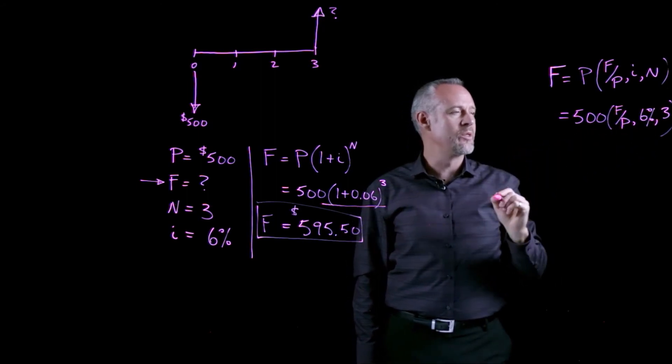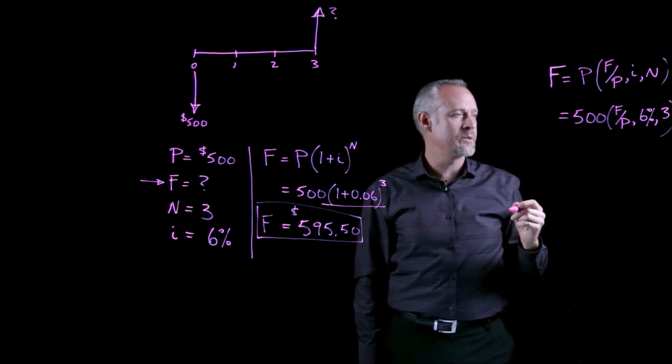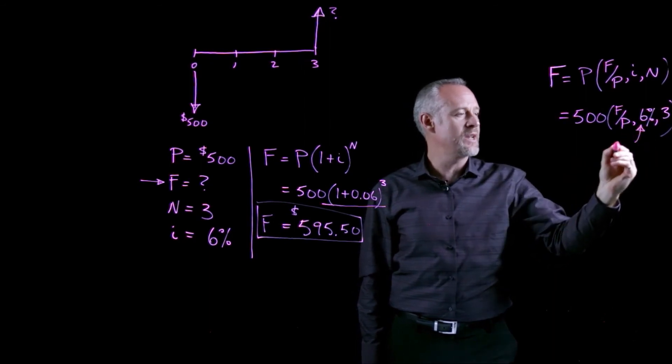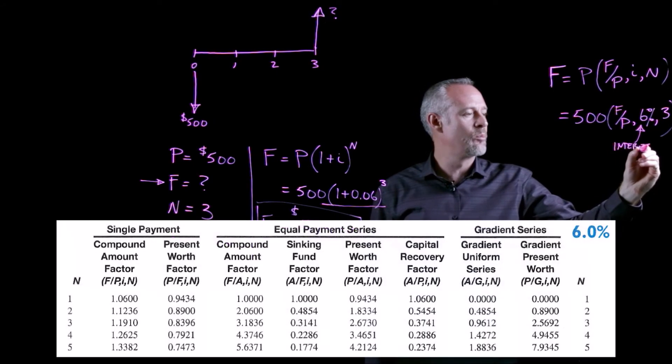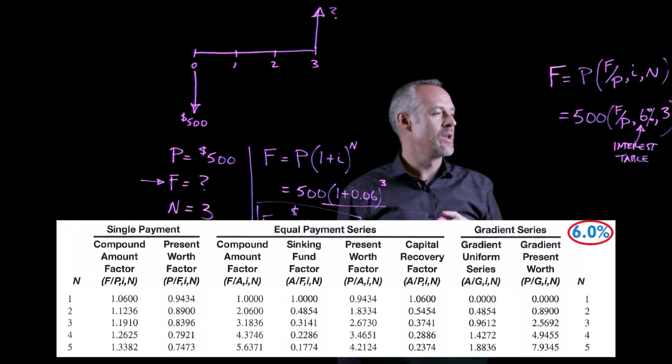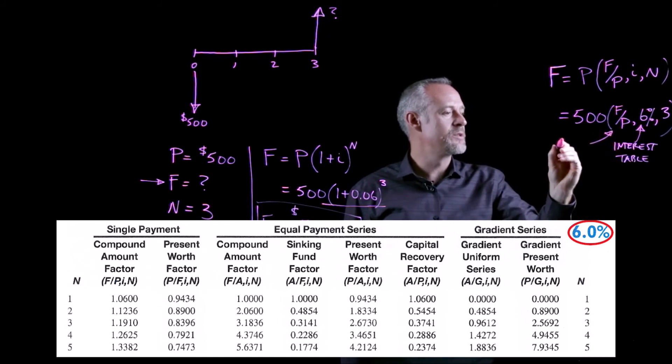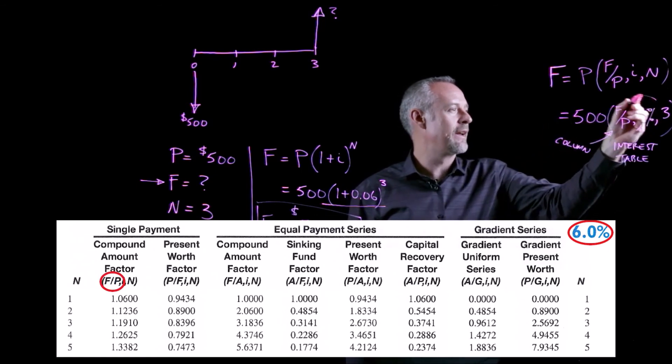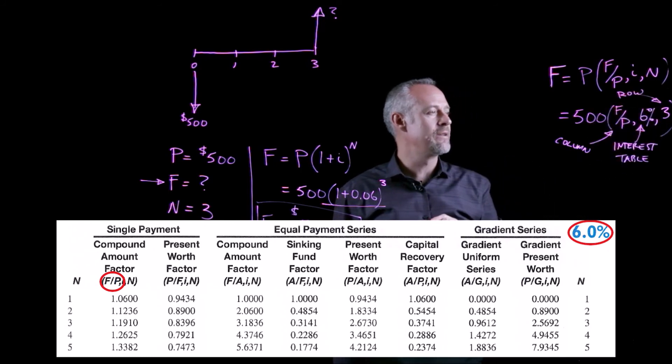You can say, what can I do with this? It just so happens that at the back of most finance textbooks and engineering economics textbooks, you'll find interest tables, and there will be an interest table for 6 percent. We'll look in the back of the book for the interest table that represents 6 percent. If I look at the 6 percent table, I find the column that is for the F given P factors, and I use the row of the table for a value of N equal to 3.